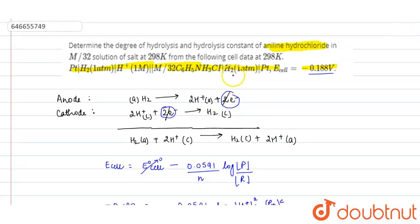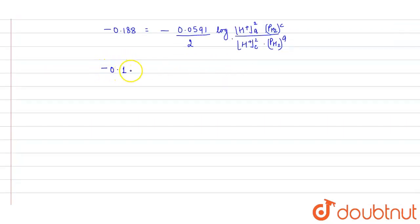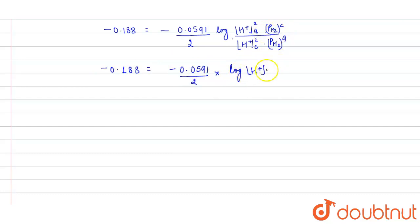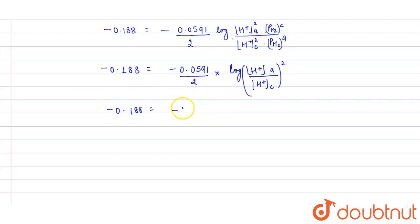The pressure of H₂ is given as 1 atm, so it cancels out. We get: minus 0.188 equals minus 0.0591 divided by 2, times 2 times log([H⁺ anode] divided by [H⁺ cathode]). Here, [H⁺ anode] is given as 1 and [H⁺ cathode] is what we need to find.